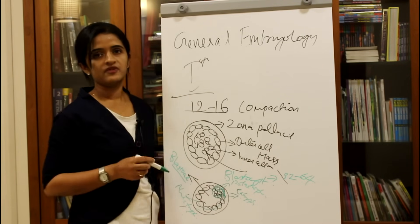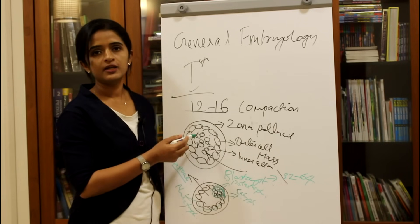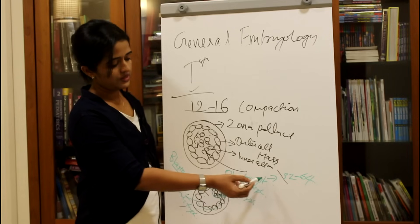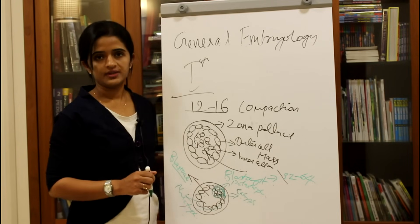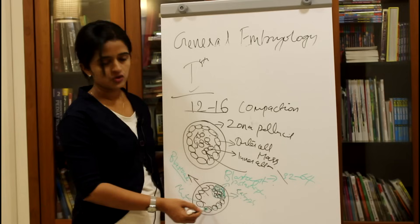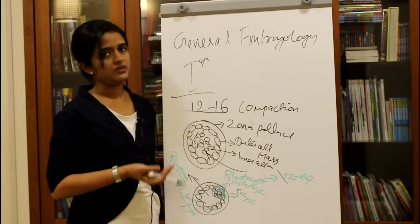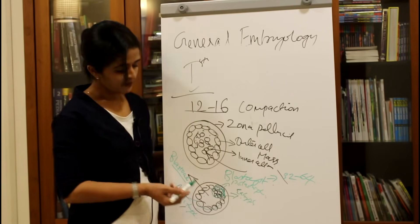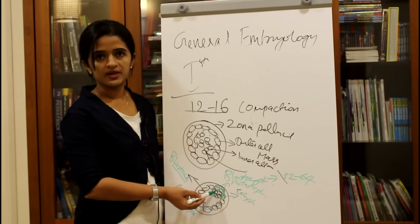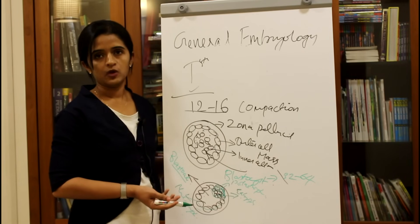Blastocyst is morula with a cavity known as the blastocoel, roughly at the 32 to 64 cell stage. The outer cell mass becomes the trophoblast giving rise to the placenta and chorion, and the inner cell mass is the embryoblast which gives rise to the embryo proper.